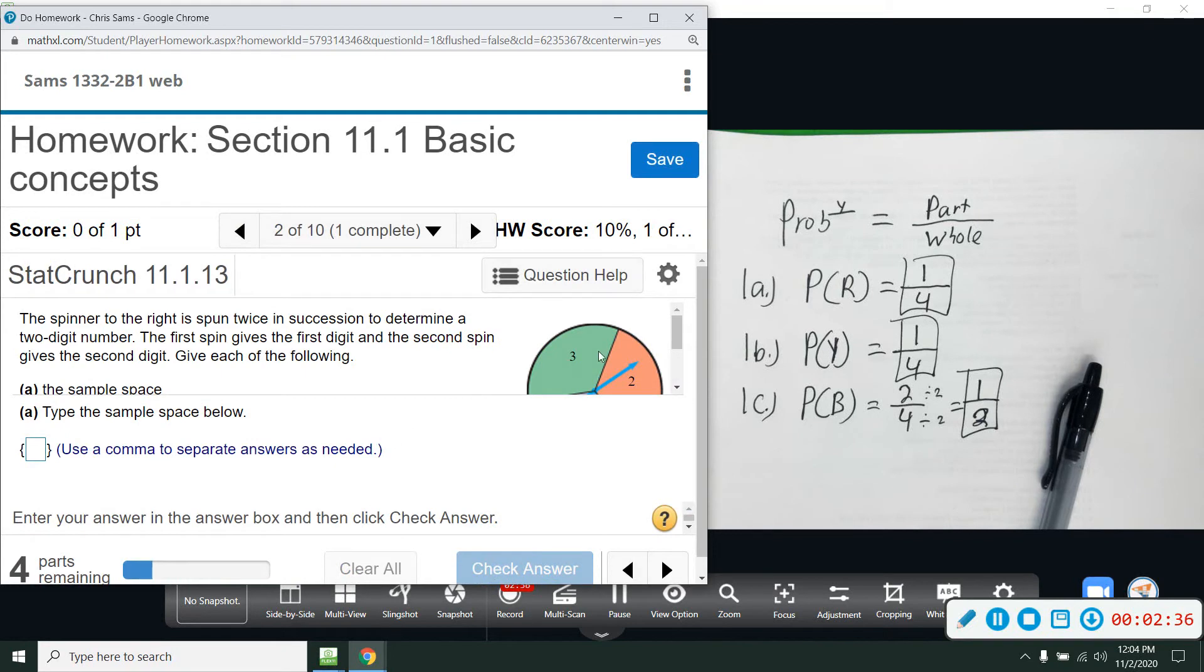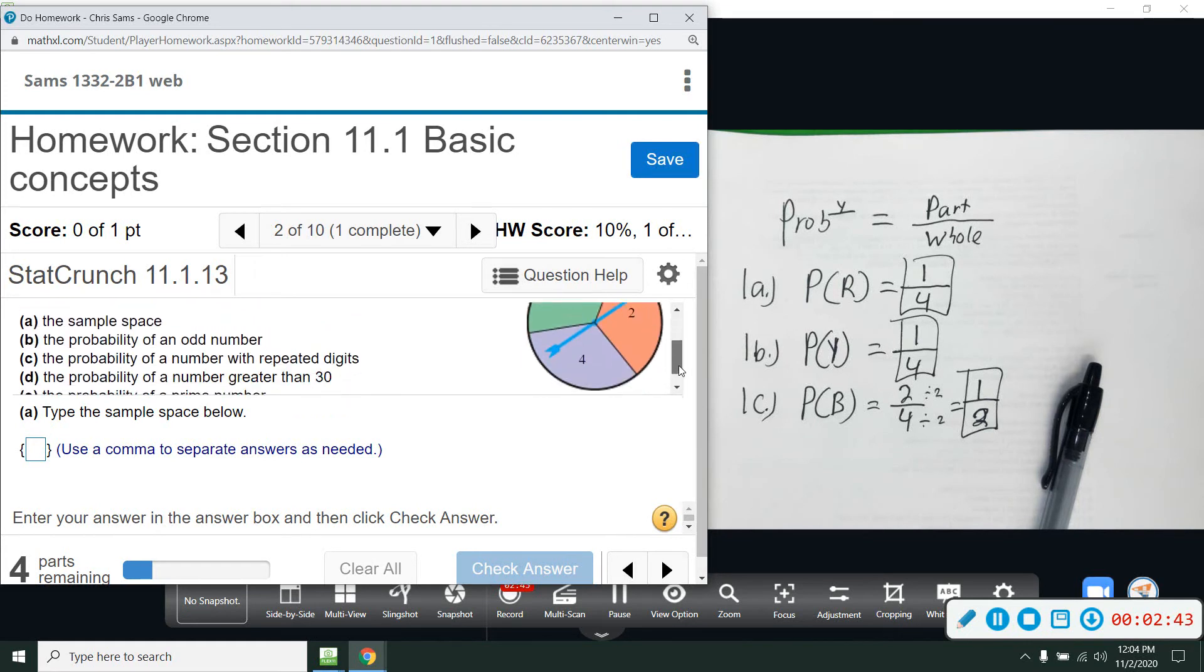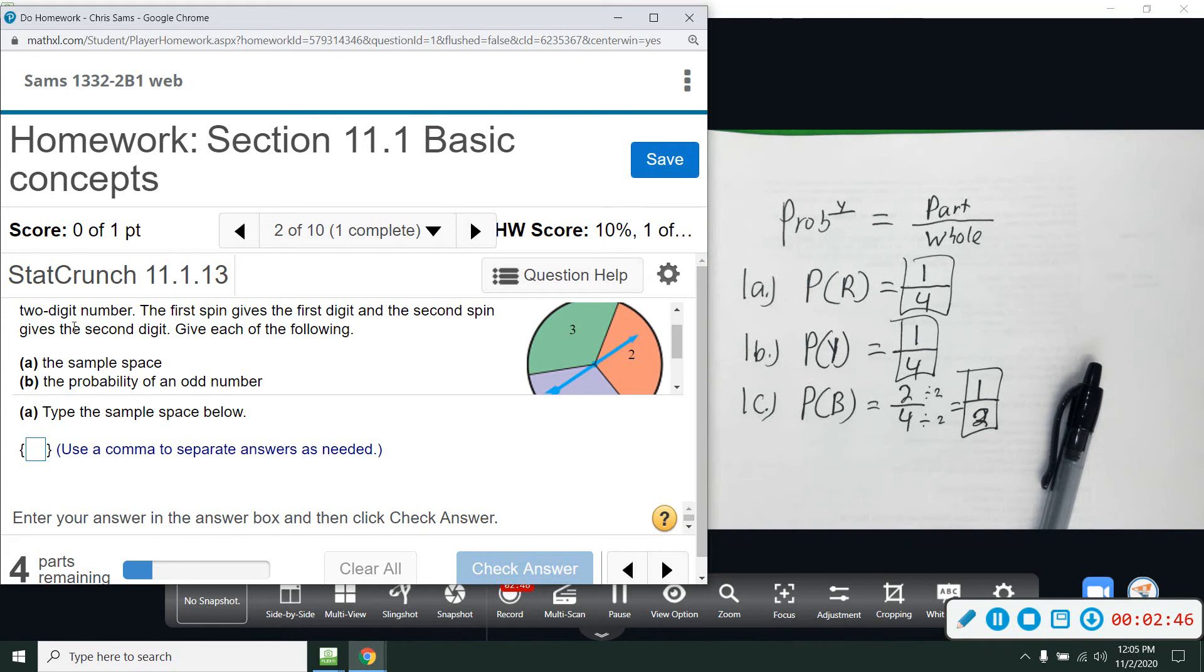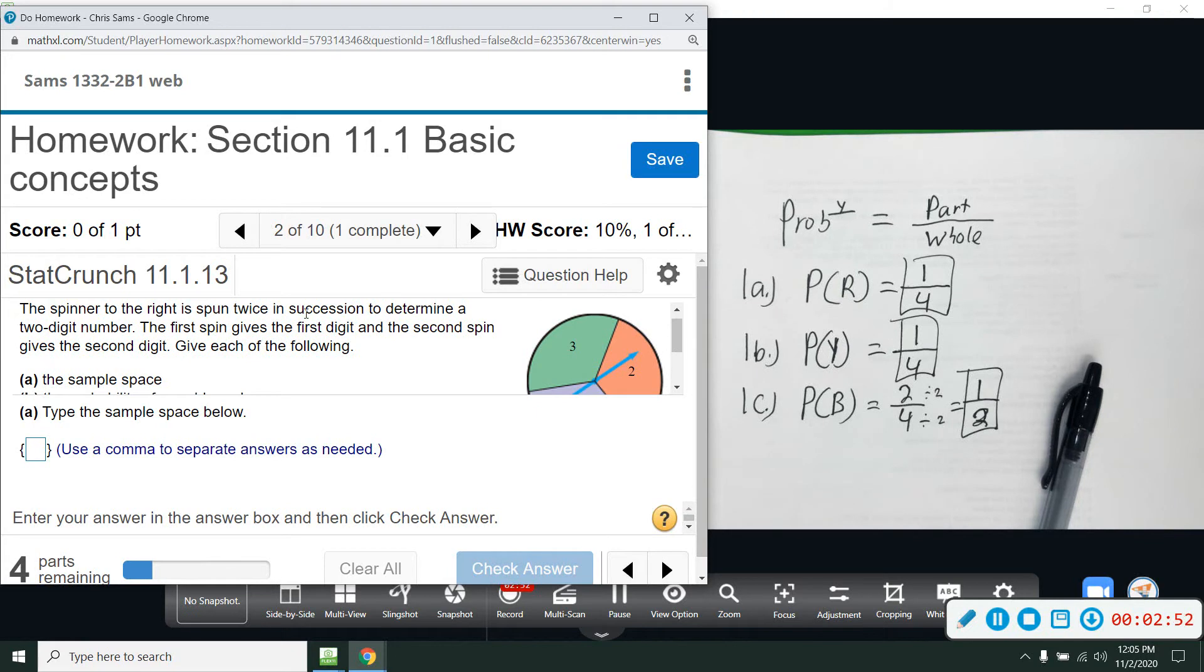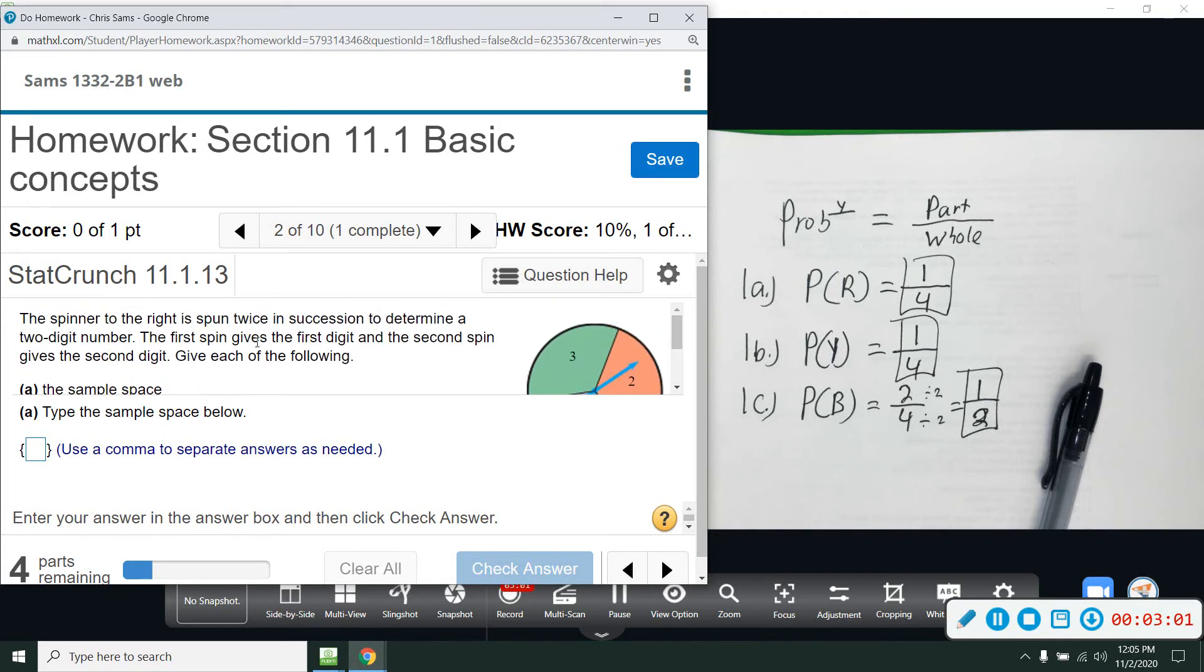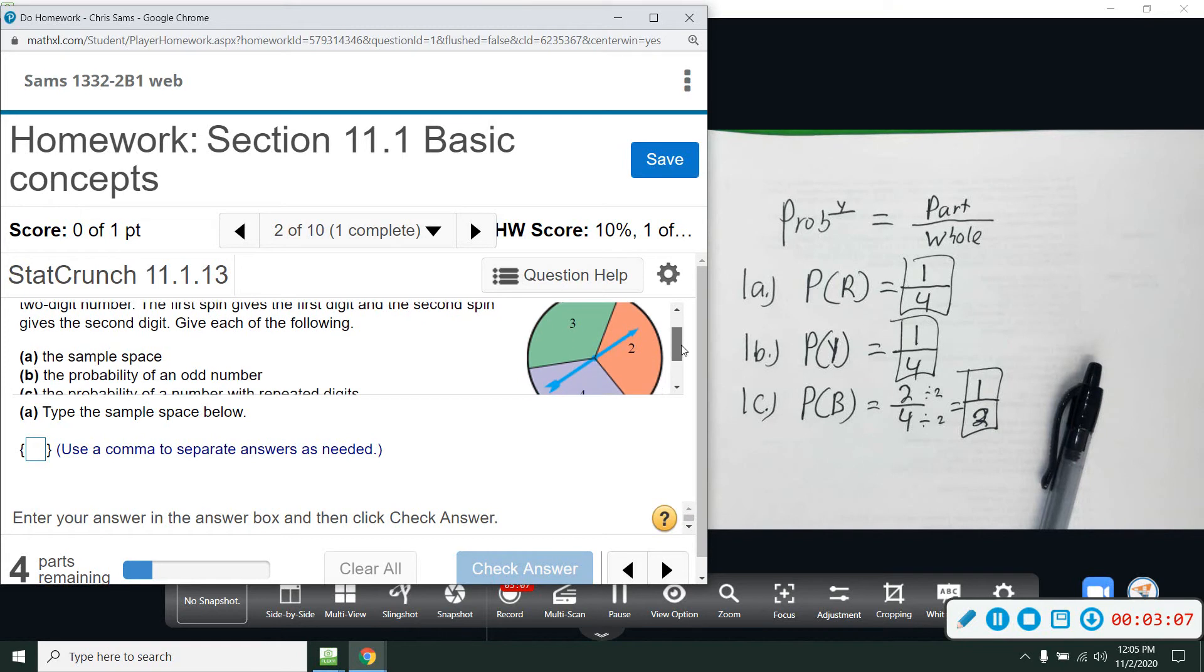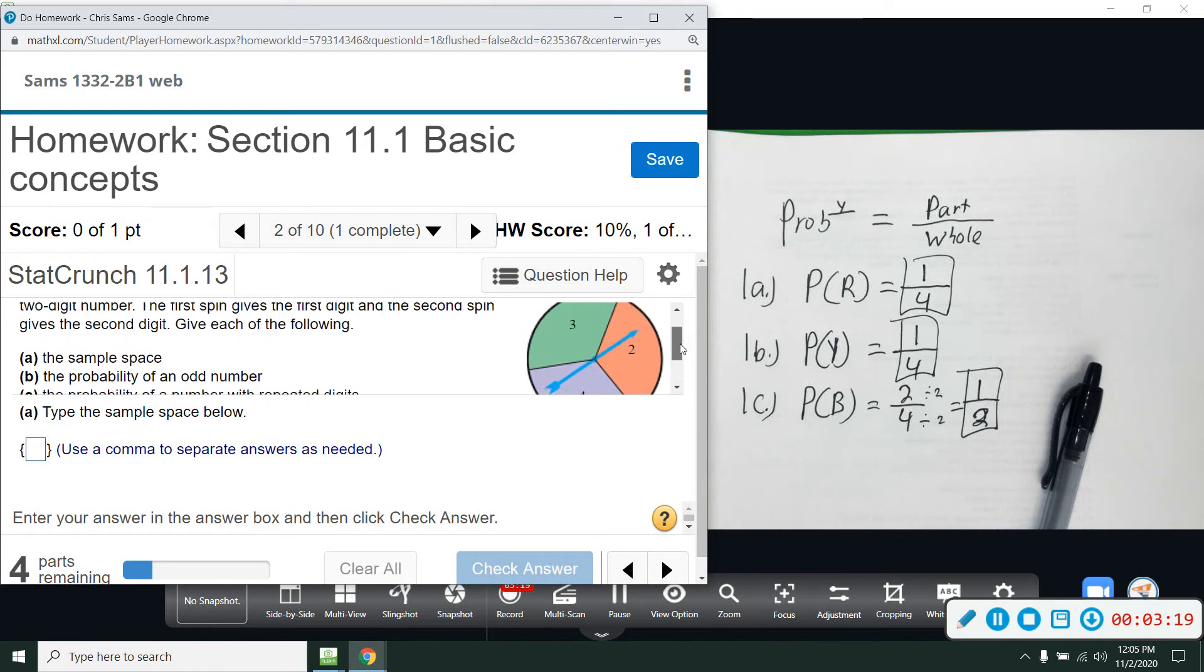All right, now number two, we have several parts A, B, C, D, E. The spinner on the right is spun twice in succession to determine a two-digit number. So we're going to spin this twice, write the first number down, and spin it again, write the second number. The first spin gives the first digit, second spin gives the second. We're going to find the sample space, probability of an odd number, probability of a number with repeating digits, probability of a number greater than 30, and then the probability that the number is prime. And we have the numbers 2, 3, and 4.